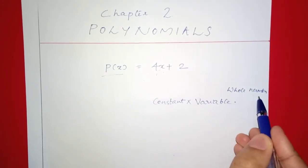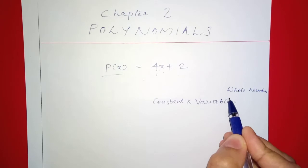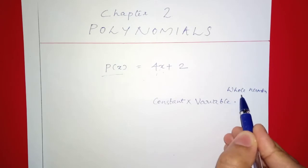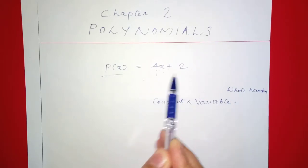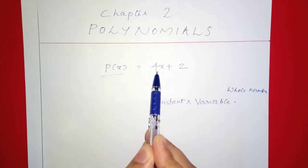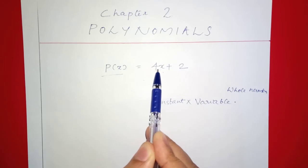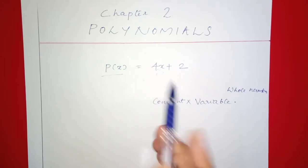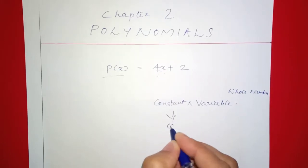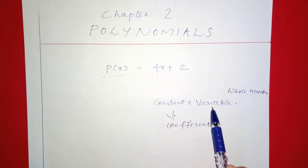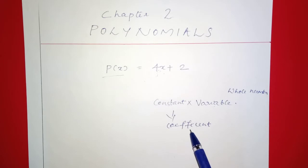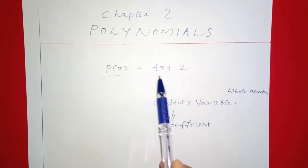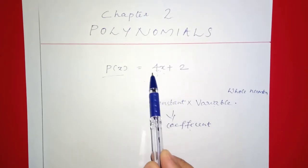The power of the variable must be a whole number. That is, the power cannot be zero or negative. The variable here is x. What is the constant? The constant is the coefficient of x — we call it the coefficient of x.